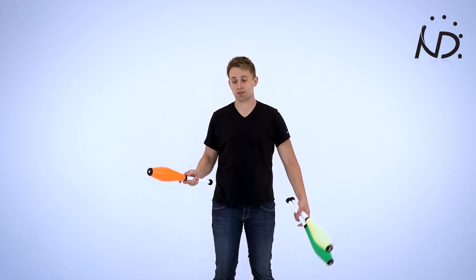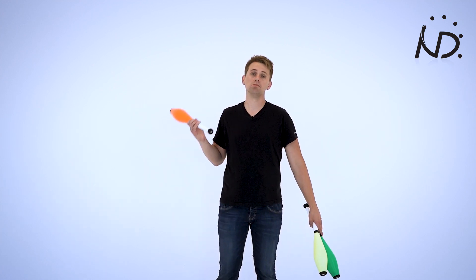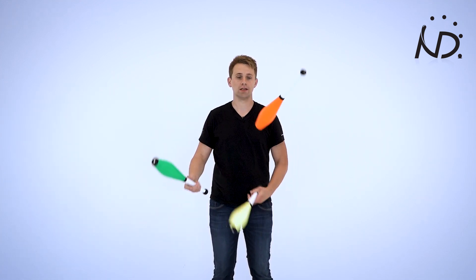I'm going to teach it to you right now. The way I learned this trick was by starting with a trick called under the arm. So when I threw the club under the arm, I tried to move the other club away.